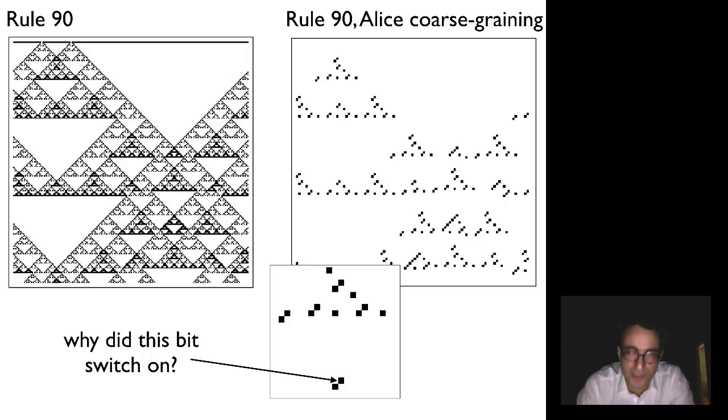But if I only look at the coarse-grained information, it looks like that bit came out of nowhere. All of the pixels above that point are all white, and somehow that set of all white pixels produce an on bit. But if I look two time steps back, that set of pixels was also all white and didn't. It didn't produce a spot.